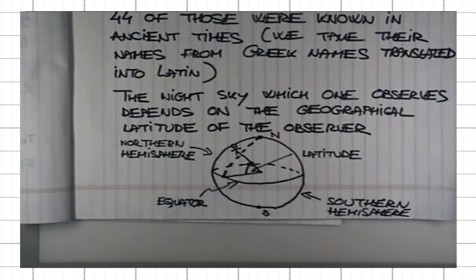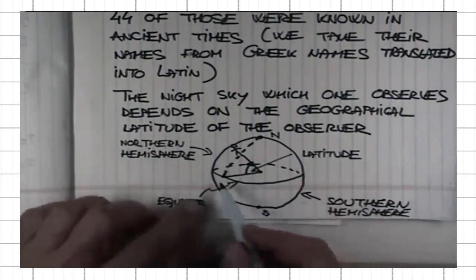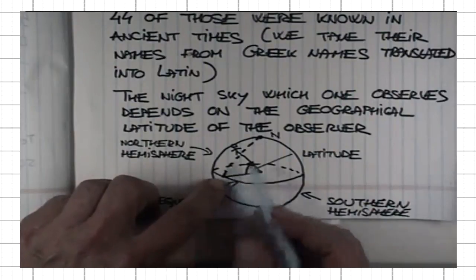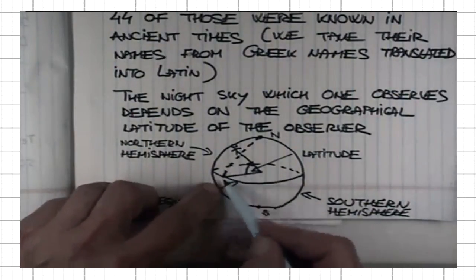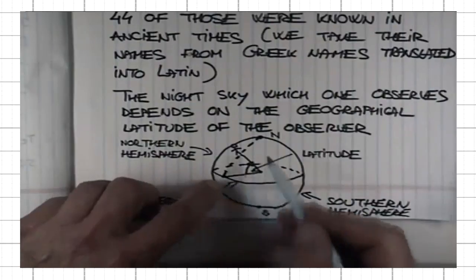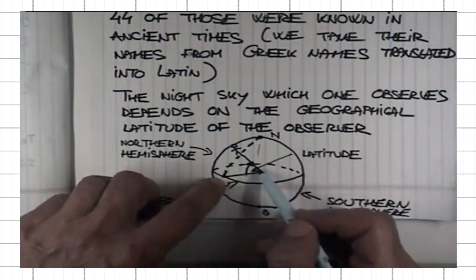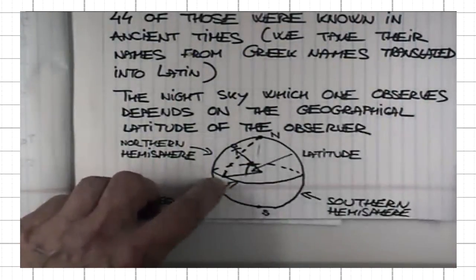For St. Catherine's, the latitude of a point on the equator is zero degrees because this angle is zero if the observer is sitting right on the equator. The latitude of observer at the North Pole is 90 degrees, right angle, north, because he's located in the northern hemisphere.